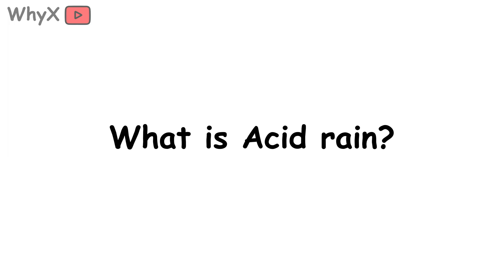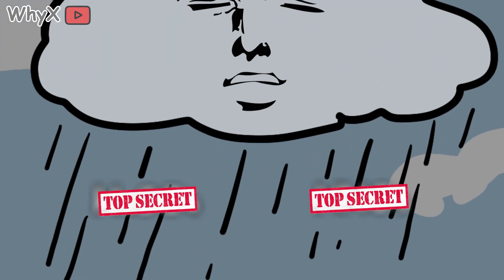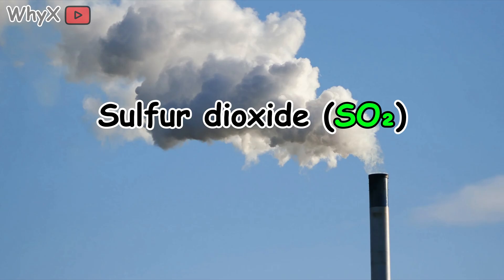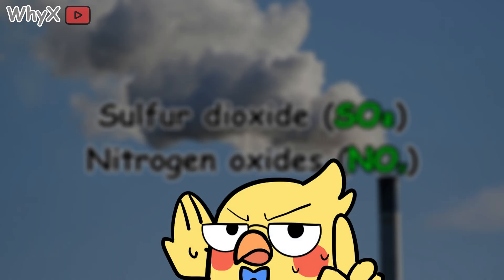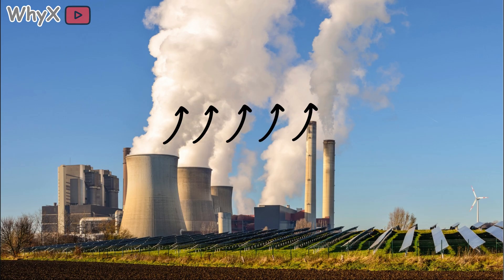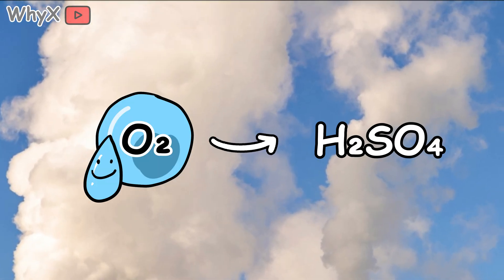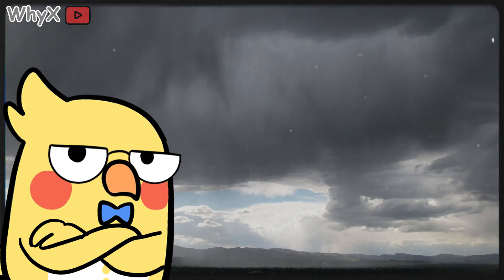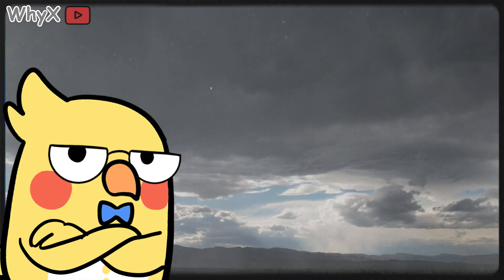So what exactly is acid rain? It's still rain, of course — water falling from clouds — but it's mixed with a cocktail of chemicals that shouldn't be there. The villains? Sulfur dioxide (SO2) and nitrogen oxides (NOx). You can't see them, but you breathe them every day if you live near factories, power plants, or heavy traffic. When these gases rise into the atmosphere, they don't just vanish. They meet water vapor and oxygen, react, and transform into sulfuric acid and nitric acid.